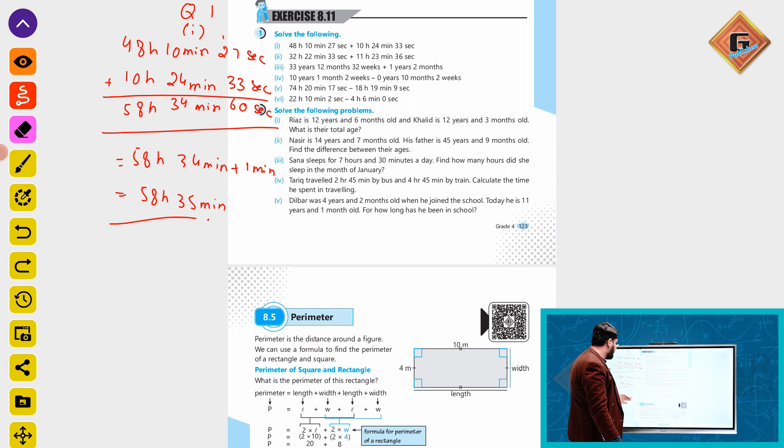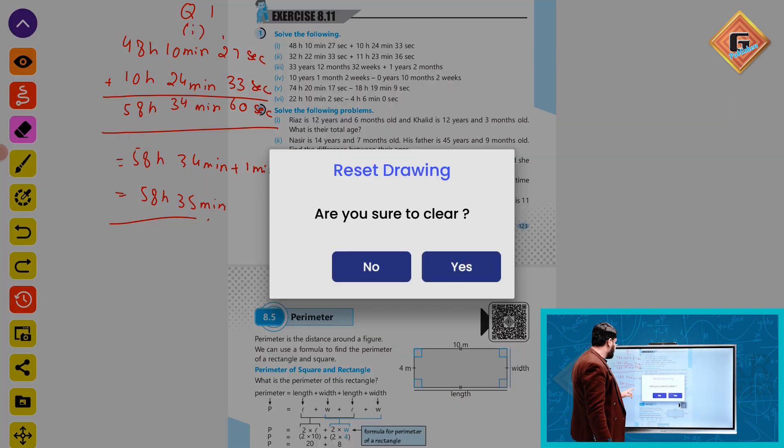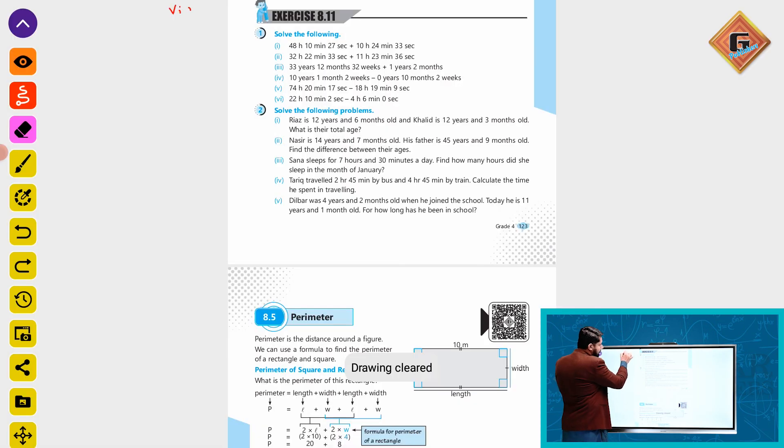Let's watch question number 6. We have 22 hours 10 minutes and 2 seconds. We will subtract 4 hours 6 minutes and 0 seconds. We subtract 2 seconds from 10 minutes and 4 minutes, giving us 22 hours and 6 minutes.